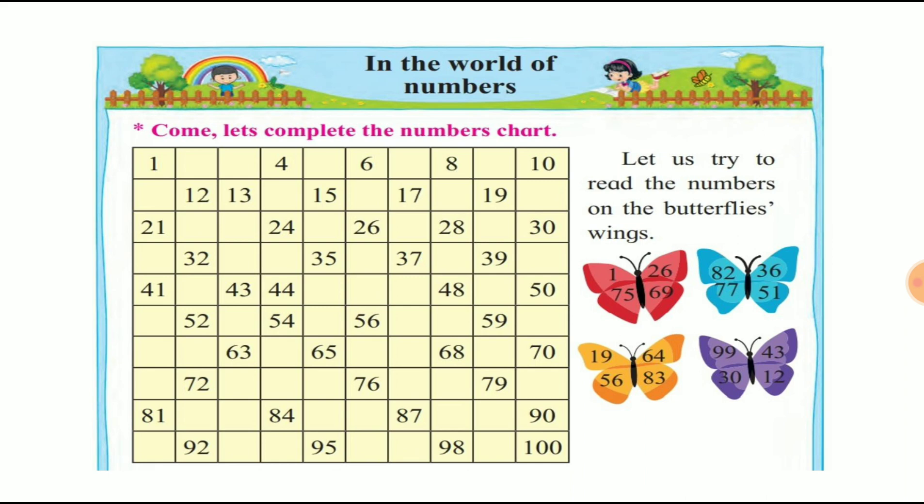Next: 91, 92, 93, 94, 95, 96, 97, 98, 99, 100. So the chart is complete — one to 100 हमने complete कर लिये हैं (we have completed).